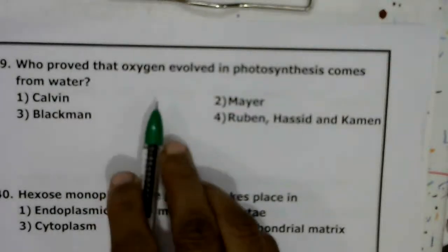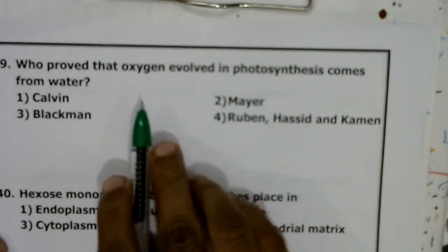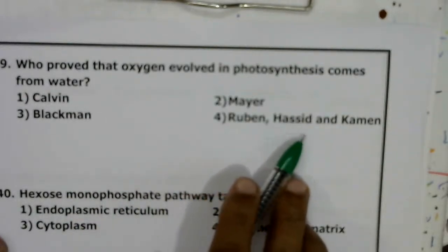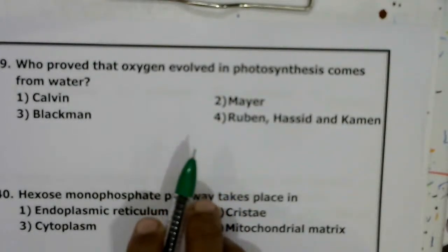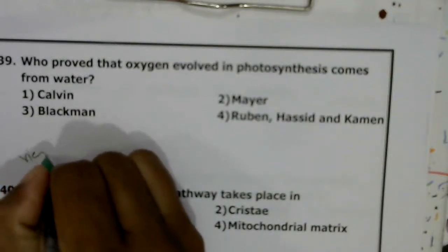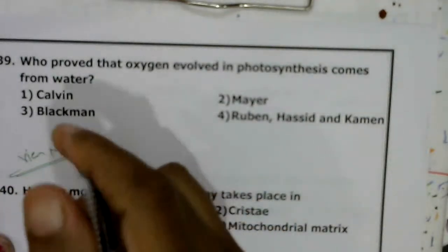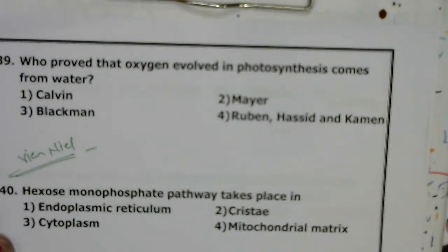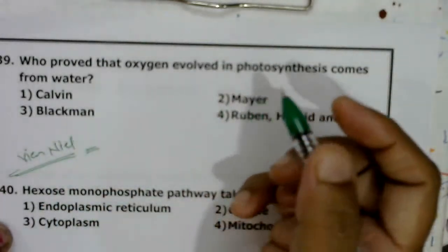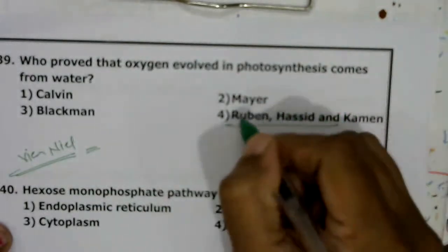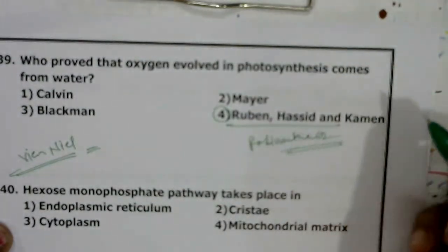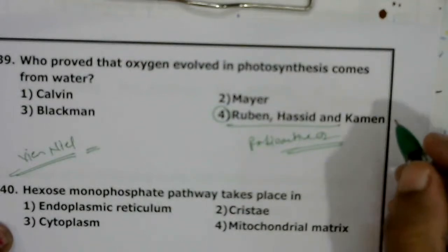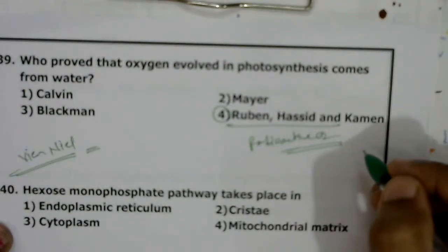Who proved that oxygen evolved in photosynthesis comes from water? Van Niel explained that hydrogen from an oxidizable substance reduces CO2 to carbohydrates with release of O2. This was experimentally proved by Rubin, Hassid, and Kamen using radioactive oxygen isotopes — they proved that O2 released during photosynthesis comes from H2O, not CO2. Calvin discovered the C3 cycle; Blackman gave the law of limiting factors. Correct answer: Rubin, Hassid and Kamen.